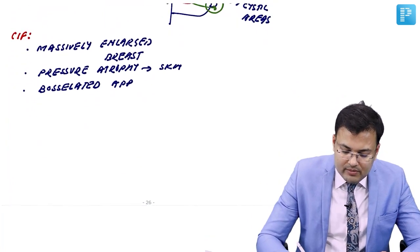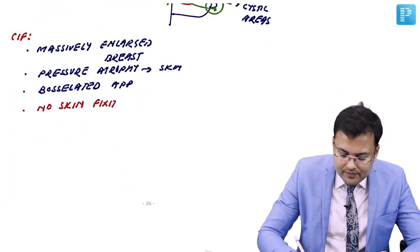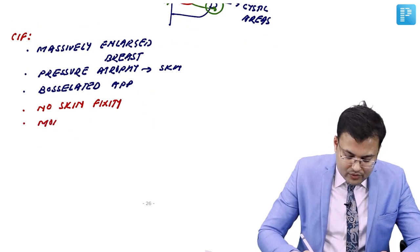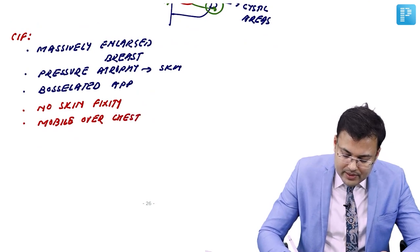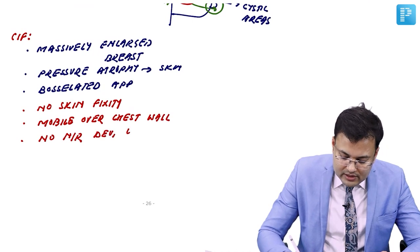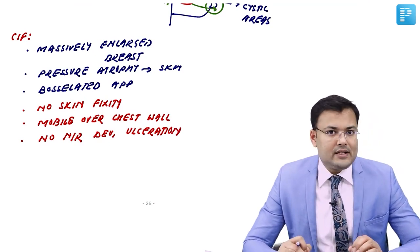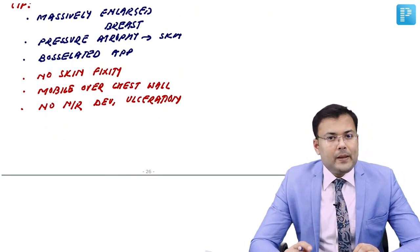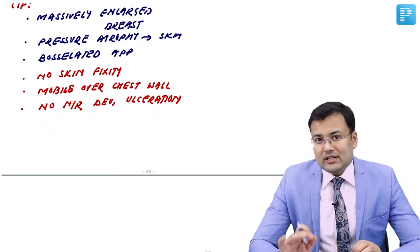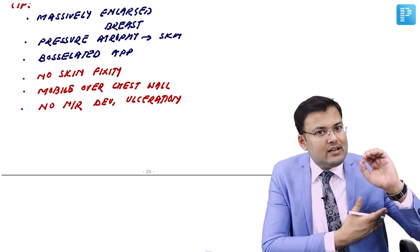Since there is no involvement of the breast skin, there is no skin fixity. The tumor is mobile over the chest wall. The nipple appears normal — no nipple retraction, deviation, or ulceration. The most common route of spread is hematogenous; lymphatic spread is not seen, so axillary lymph nodes are not involved.